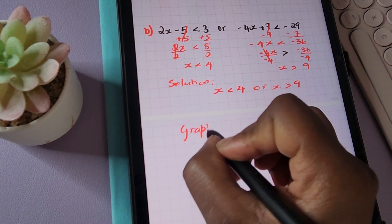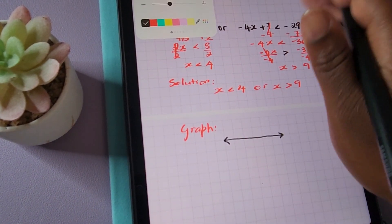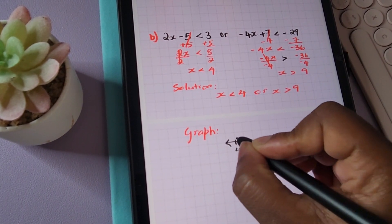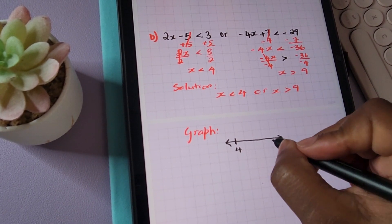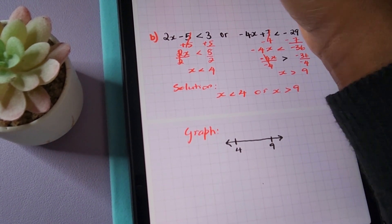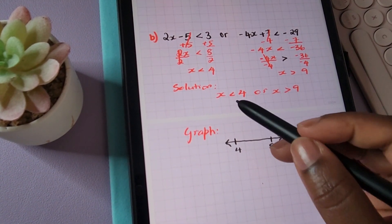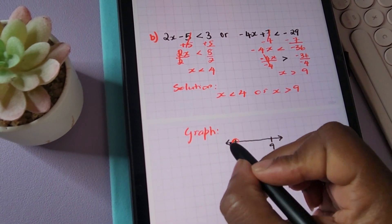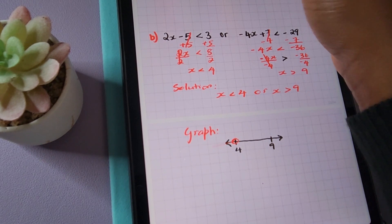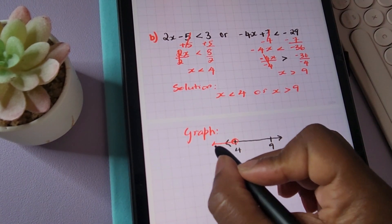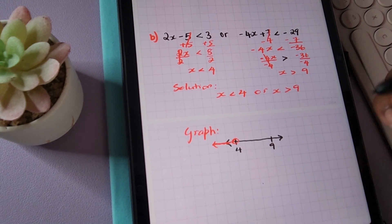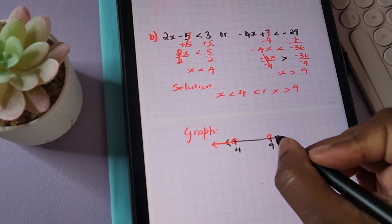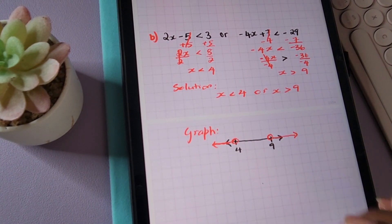Now let's graph our solution. I'll place four and nine on the number line. To represent x is less than four, we put an open circle at four with the arrow going to the left. To represent x is greater than nine, we put an open circle at nine with the arrow going to the right. And that's our graph to represent the solution.